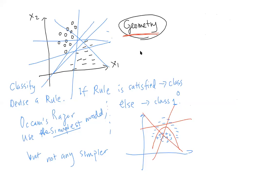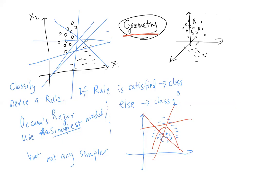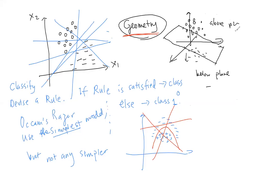This is in two dimensions. In three dimensions, the separating boundary becomes a plane rather than a line. Data points on one side of the plane are classified as minus; above the plane as plus. This plane need not be flat — it can be a curved plane, just as in two dimensions you might need a curved boundary. These decision rules are geometrical objects.